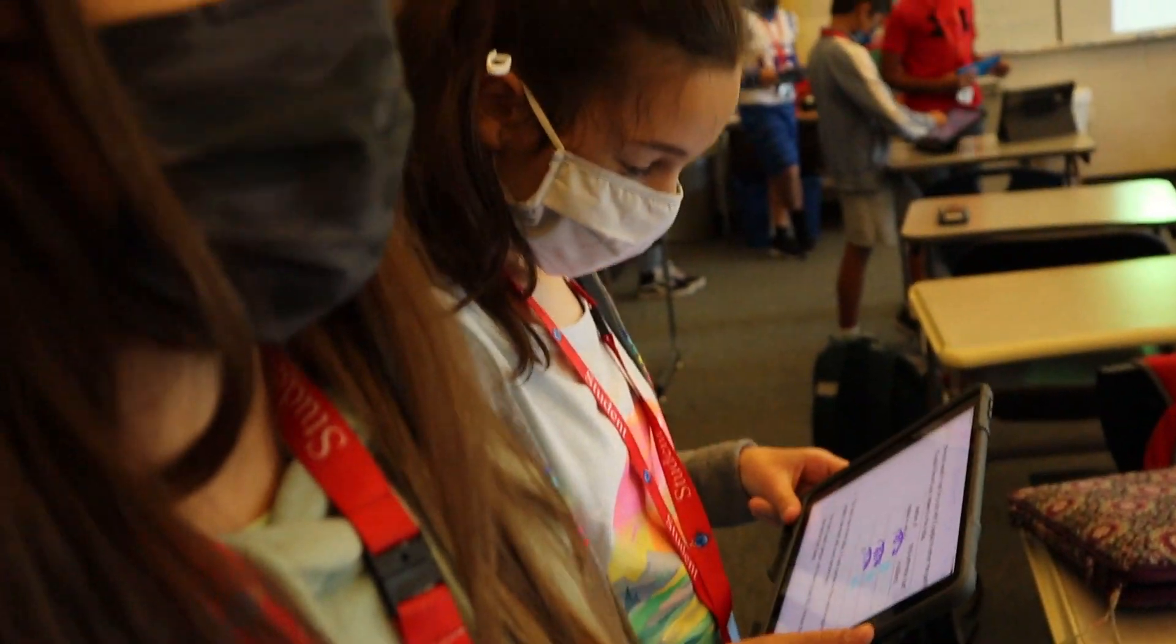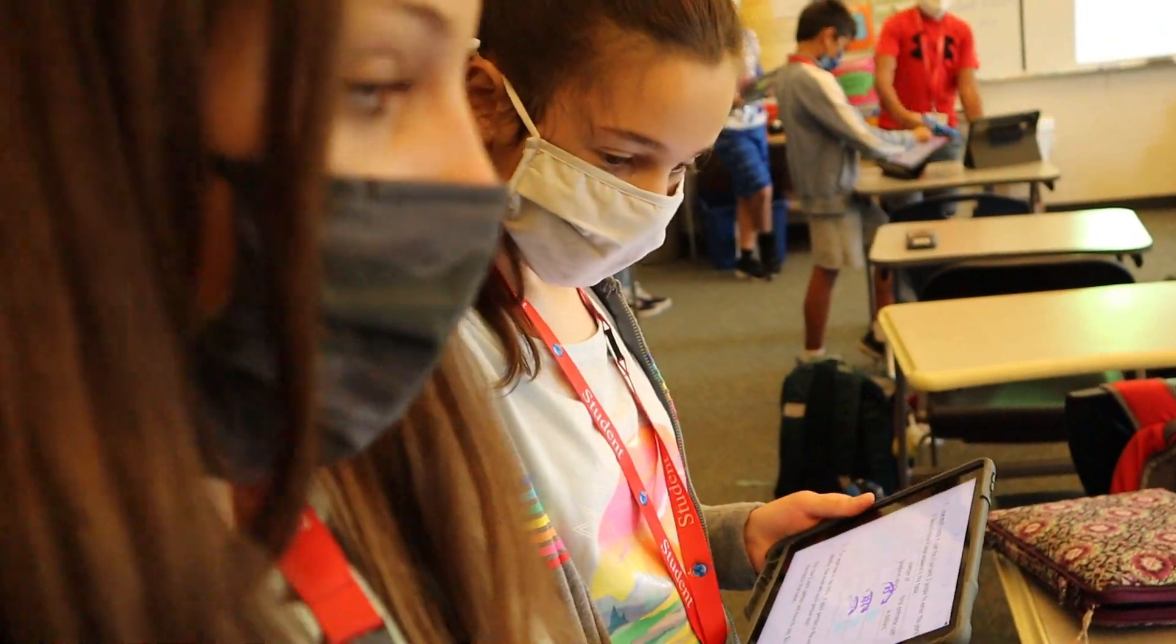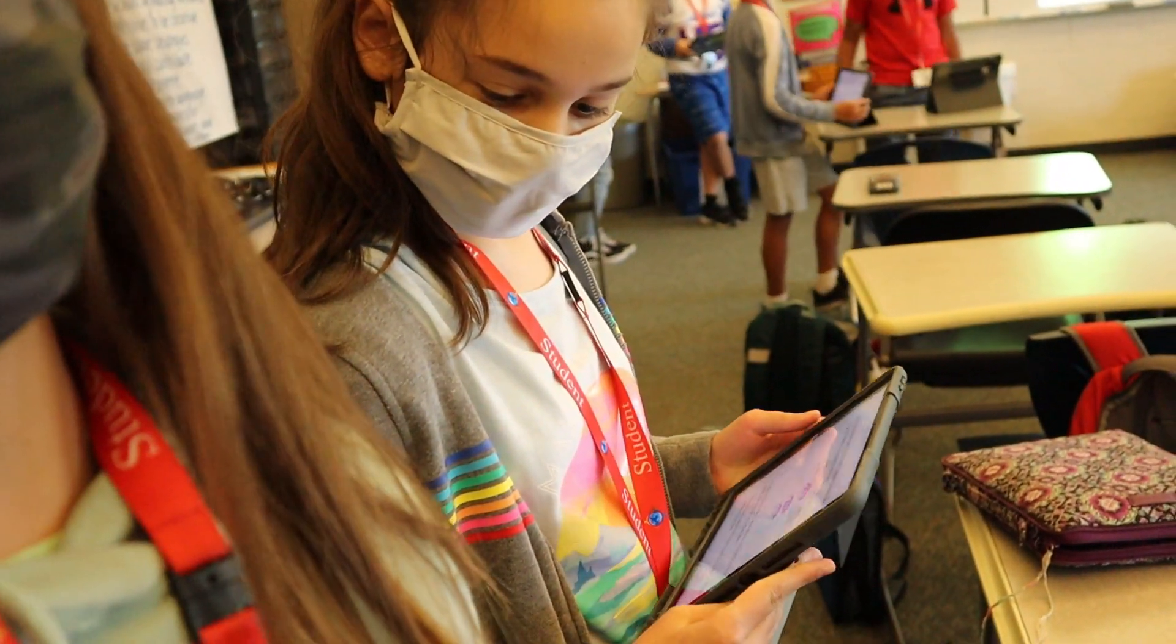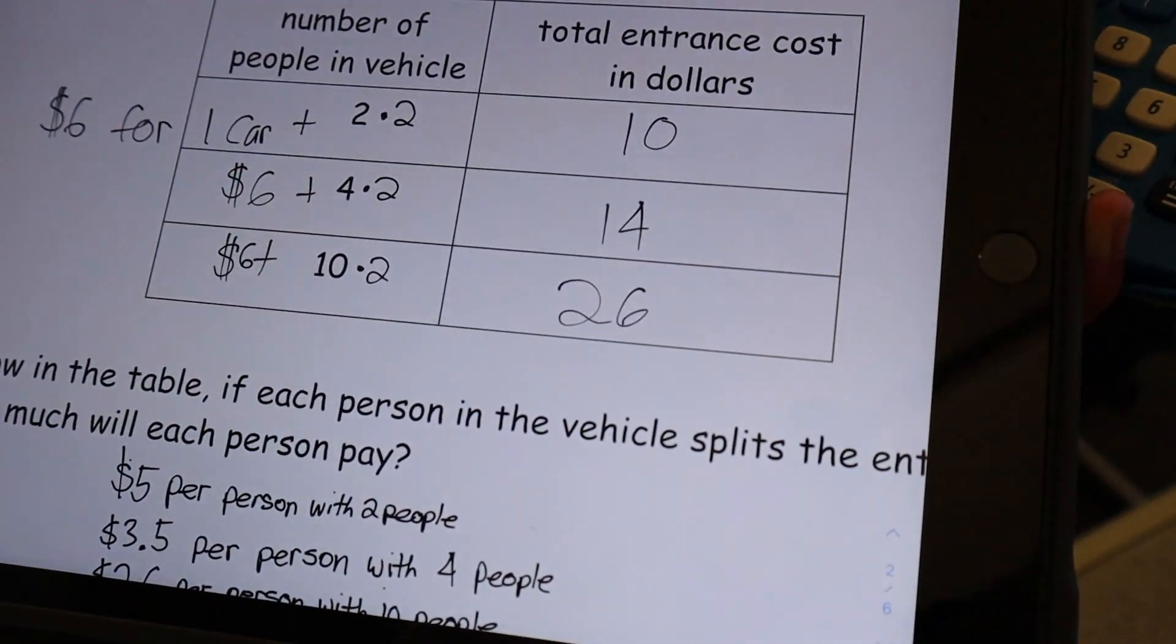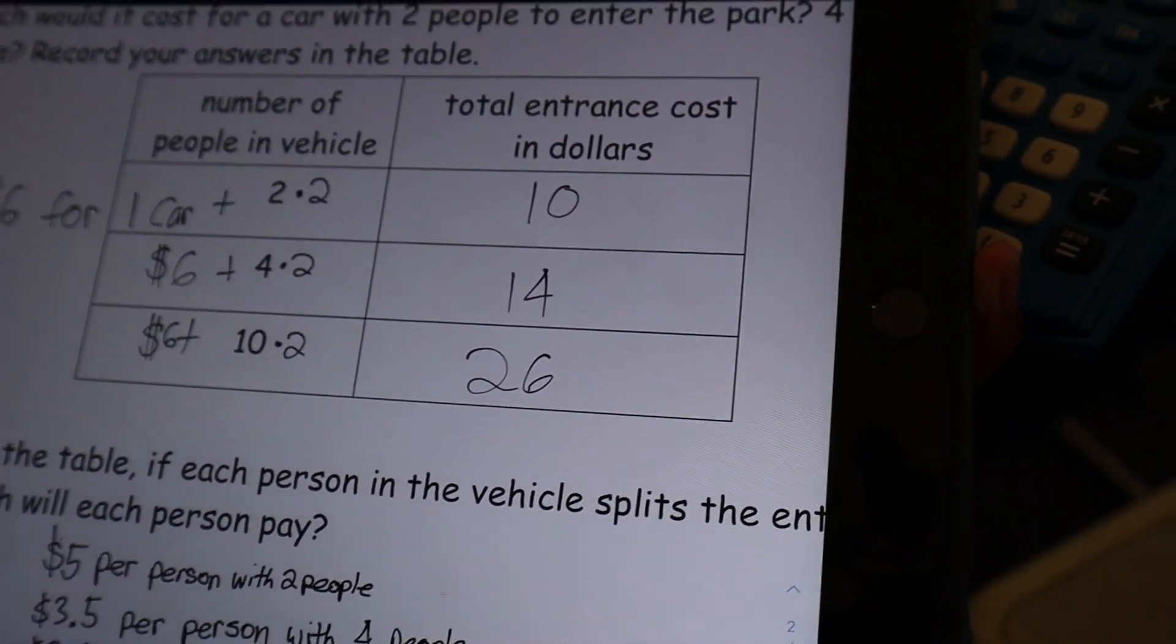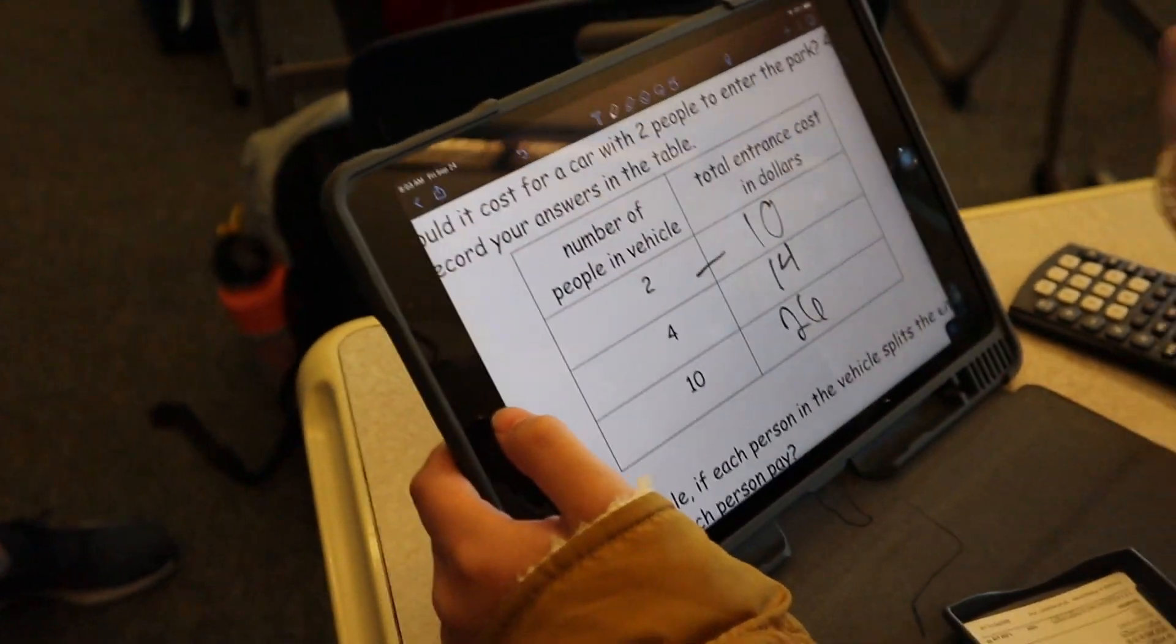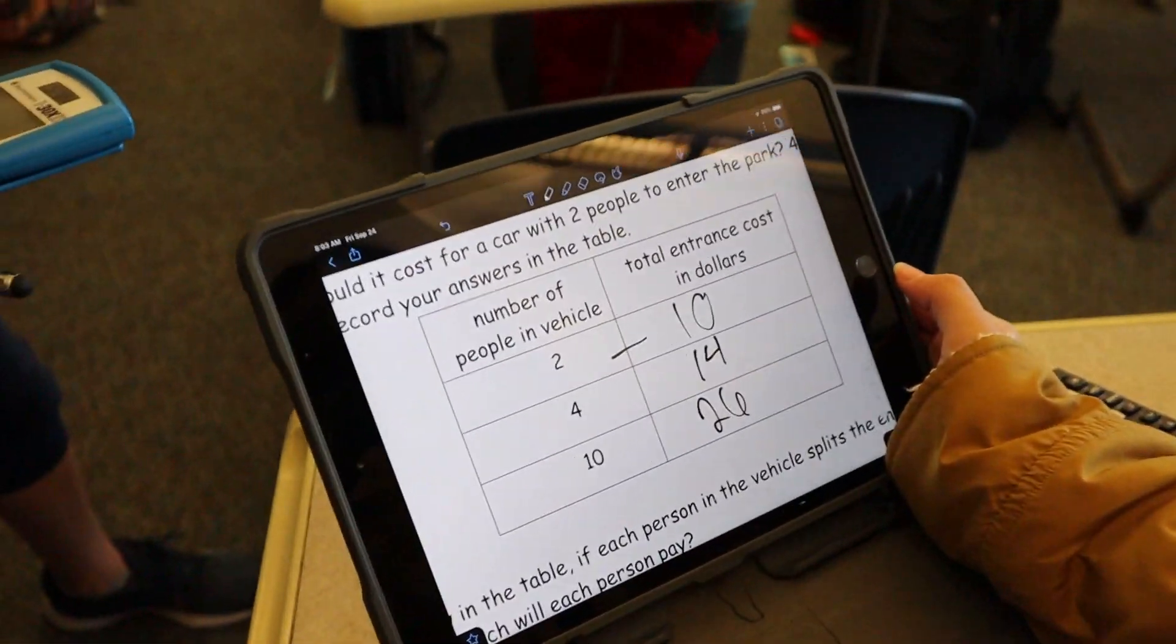Okay, so I added $6 for every car. And then I multiplied however many people were in the car by two because that's how much they have to pay each. Okay, where were you at with this? What do you think about the two different ways that this was done?